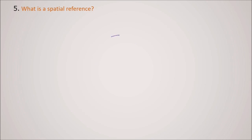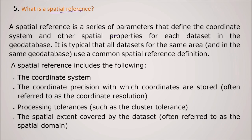What is a spatial reference? What do we mean when we say spatial reference? A spatial reference is a series of parameters that define the coordinate systems and other spatial properties of each data set in the geodatabase. It is typical that all data sets for the same area and in the same geodatabase use common spatial reference definition. So what this spatial reference contains? The coordinate system. The coordinate precision between which the coordinates are often referred to as the coordinate resolution. And the processing tolerances such as cluster tolerance. And the spatial extent which is covered by the data set, that is known as the spatial domain.